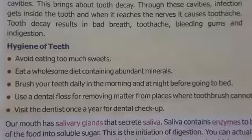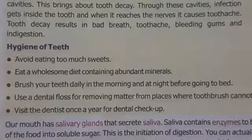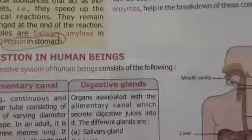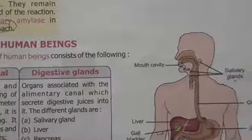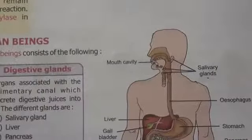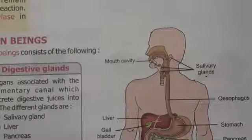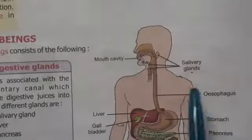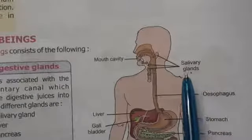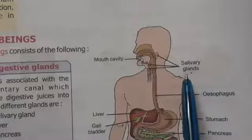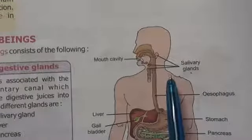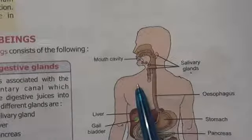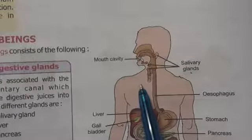Yesterday we were also talking about the salivary glands. Children, if you remember, I had told you how many salivary glands are present in a human body. Yesterday I told you that in our human body you have got three pairs of salivary glands. You can see here in the figure also — one, two and three. So you have got three pairs of salivary glands.